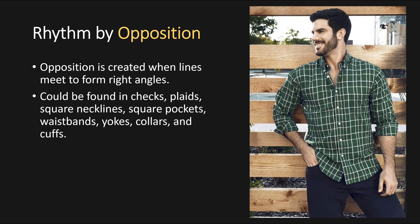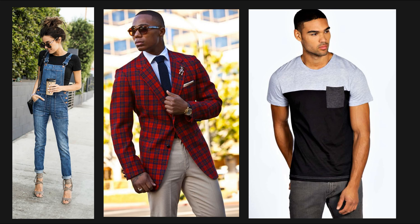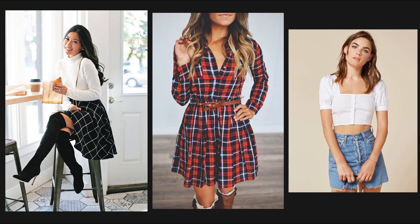Then we have rhythm by opposition. This is created when lines meet to form right angles. It can be found in checks, plaids, square necklines, square pockets, waistbands, yokes, collars, and cuffs — basically anything that's square can show rhythm by opposition. It's shown in the picture of the man in the checked shirt. Here we have the woman in the overalls showing opposition with the square neckline and square pockets. The man in the middle is using it with the plaid jacket. The man on the right is using it with the square pocket as well as the dividing line between the gray and black on the shirt. We also see some plaid skirts, and the last picture shows it with the square neckline of a crop top and the square shape of the miniskirt.